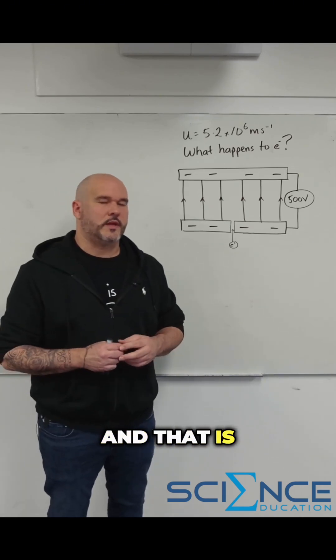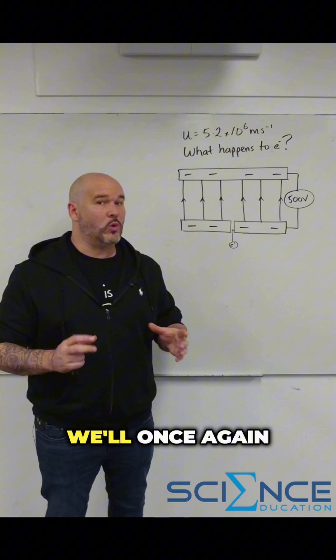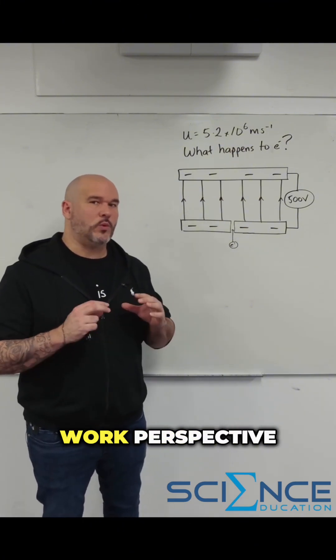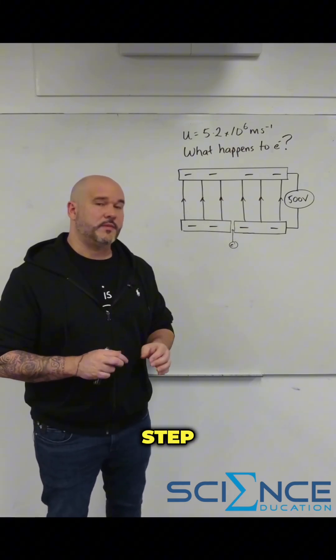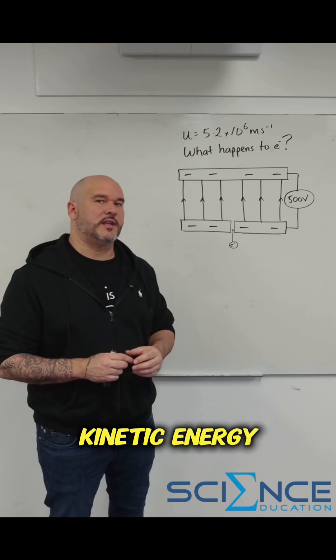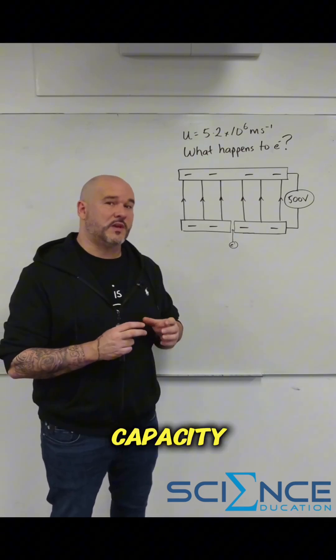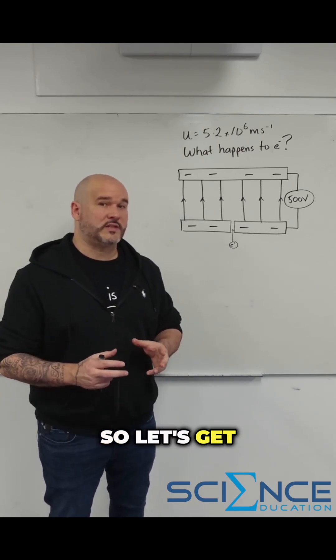So we're going to do the most general one, and that is what happens to the electron. We'll once again explore this from an energy and work perspective. Our first step is to figure out the initial kinetic energy of the electron and the electric field's capacity for doing work.